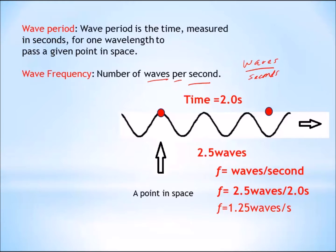But we don't want to use waves per second as our unit of measurement. In common wave nomenclature, frequency is normally measured in a unit called the Hertz. 1 Hertz is equal to 1 wave per second, or 1 cycle per second. So the answer is 1.25 Hertz — that is the frequency of this wave.